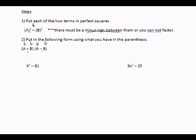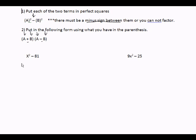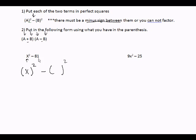Let's use these steps to factor these problems. The first problem is x squared minus 81. Step one, put them into perfect square form — something squared minus something squared. What can I put in this first parentheses to get x squared? Just put an x in there: x squared equals x squared. Now what goes into the second parentheses — something squared has to equal 81 — and that is nine, since nine squared equals 81. So that's step one: we have something squared minus something squared, perfect squares.